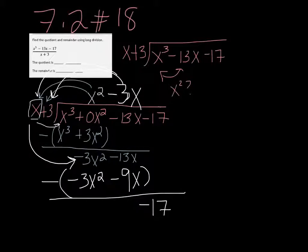And so negative 13 minus a negative 9 would be negative 13 plus 9. So that would be minus 4x. And of course, negative 3x squared minus a negative 3x squared is just 0.